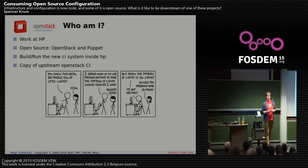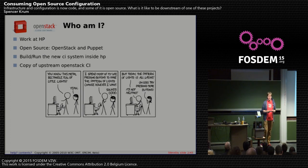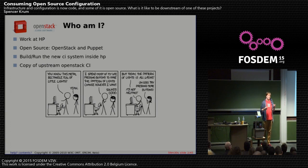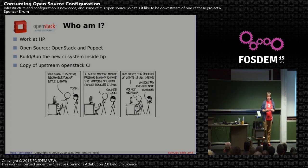So who am I? My name is Spencer Crum. I work at HP. My primary open source contributions are to the Puppet ecosystem and to the OpenStack ecosystem. What we do is we run a CI system inside HP, and it turns out it's a clone of an upstream OpenStack CI system, and Liz will be talking about that directly after this talk.